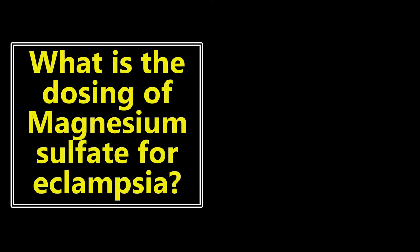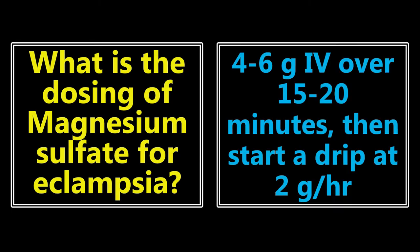What is the dosing for magnesium sulfate for eclampsia? We all know the treatment is magnesium sulfate, but you have to take it to the second step — you need to know the dosing as well. Generally, the dosing is going to be 4 to 6 grams IV over 15 to 20 minutes, and then you start a drip at 2 grams per hour after that. You want to be checking your patient's hemodynamics and seizure activity. Since you're giving these higher doses, remember the signs of magnesium toxicity: decreased respiratory drive and loss of deep tendon reflexes.